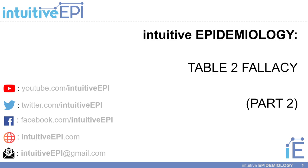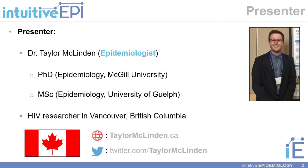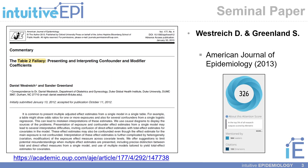Hello, everyone. Welcome back for part two of the video series where we will now take a deep dive into the Table 2 fallacy. The paper by Westerreich and Greenland titled 'The Table Two Fallacy: Presenting and Interpreting Confounder and Modifier Coefficients' is the main source of information we will use. This paper was published in 2013 in the American Journal of Epidemiology.